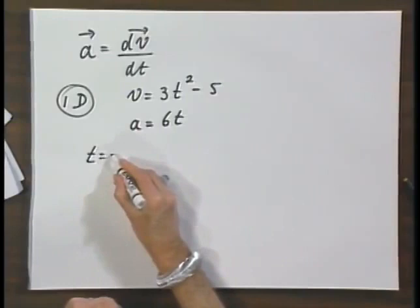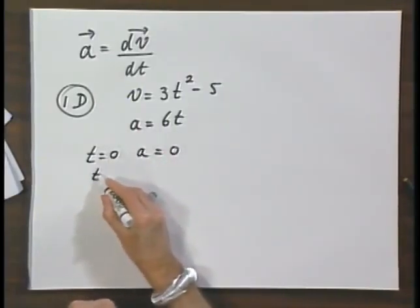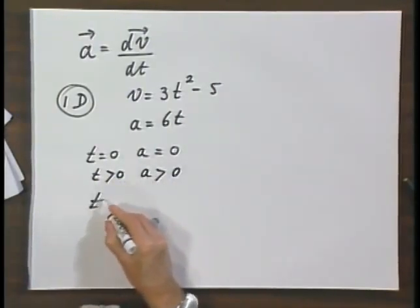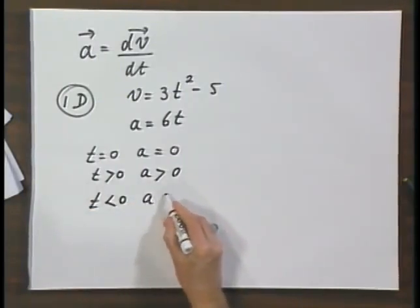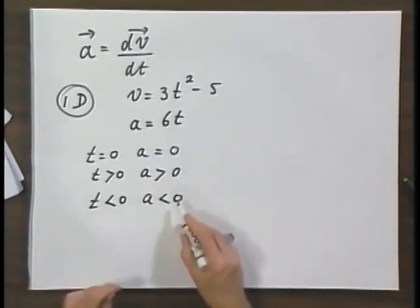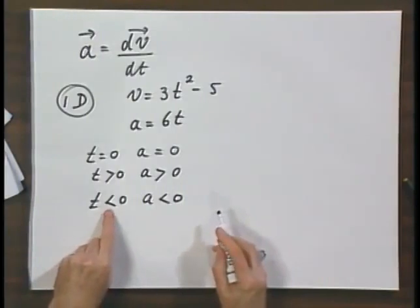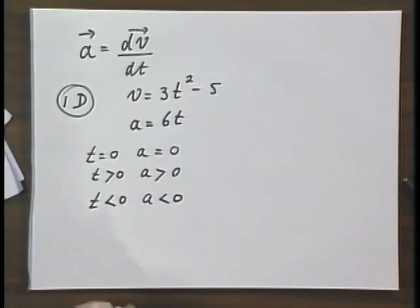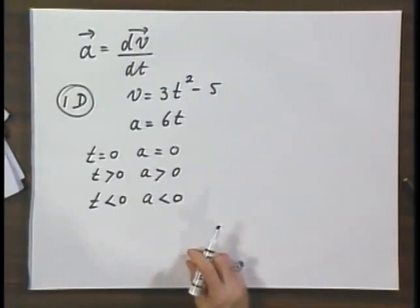In fact if t equals zero you will see that the acceleration is zero. If t is larger than zero, for positive numbers the acceleration is positive. And for negative numbers, t smaller than zero, the acceleration is negative. And so the signs here automatically take care of the direction. For values lower than zero, times lower than zero, the acceleration is in the minus x direction. For values larger than zero the acceleration is in the positive direction.